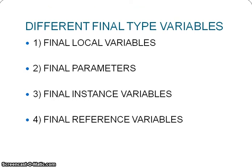The different types of final variables are: final local variables, final parameters, final instance variables, and final reference variables. We'll see each type in detail in the coming tutorials. Hope you guys understand this video — thanks for watching, and if you like it, don't forget to subscribe.